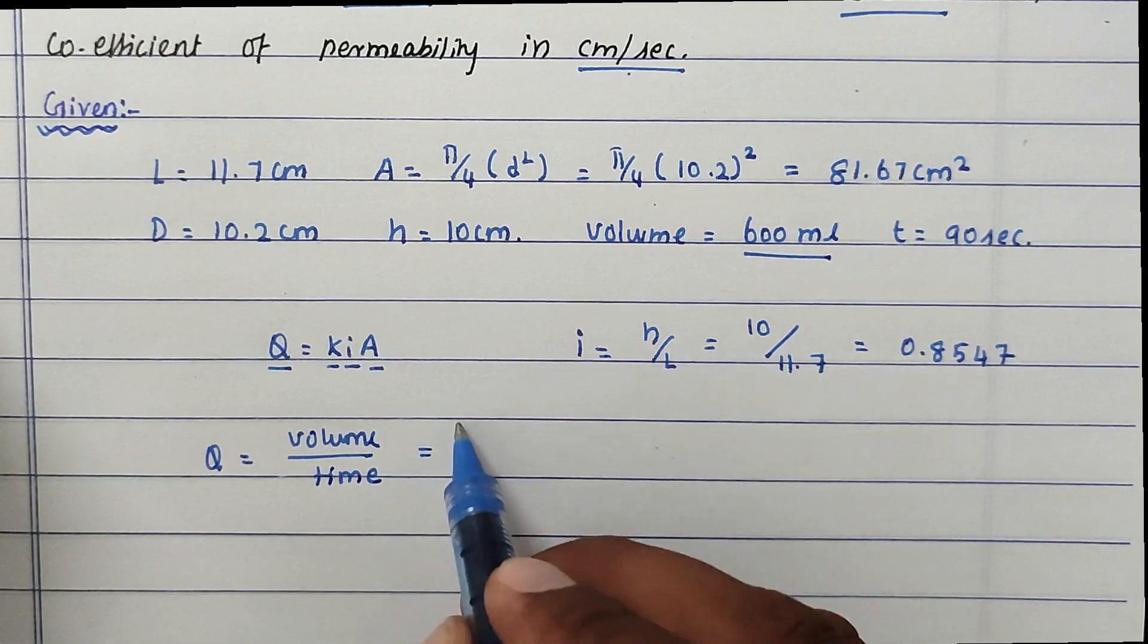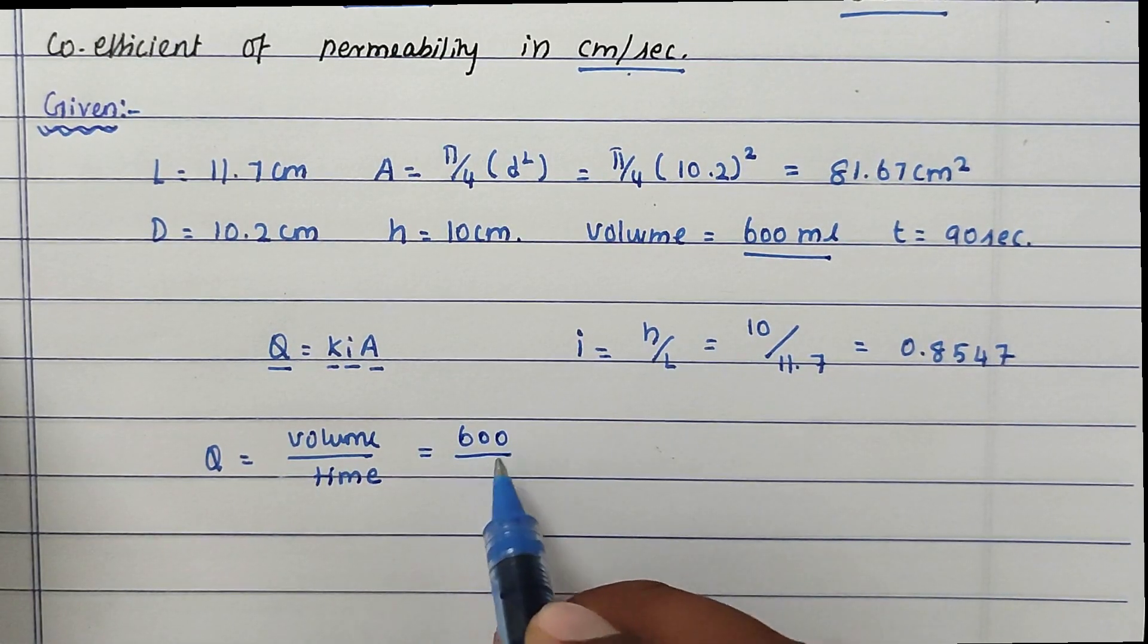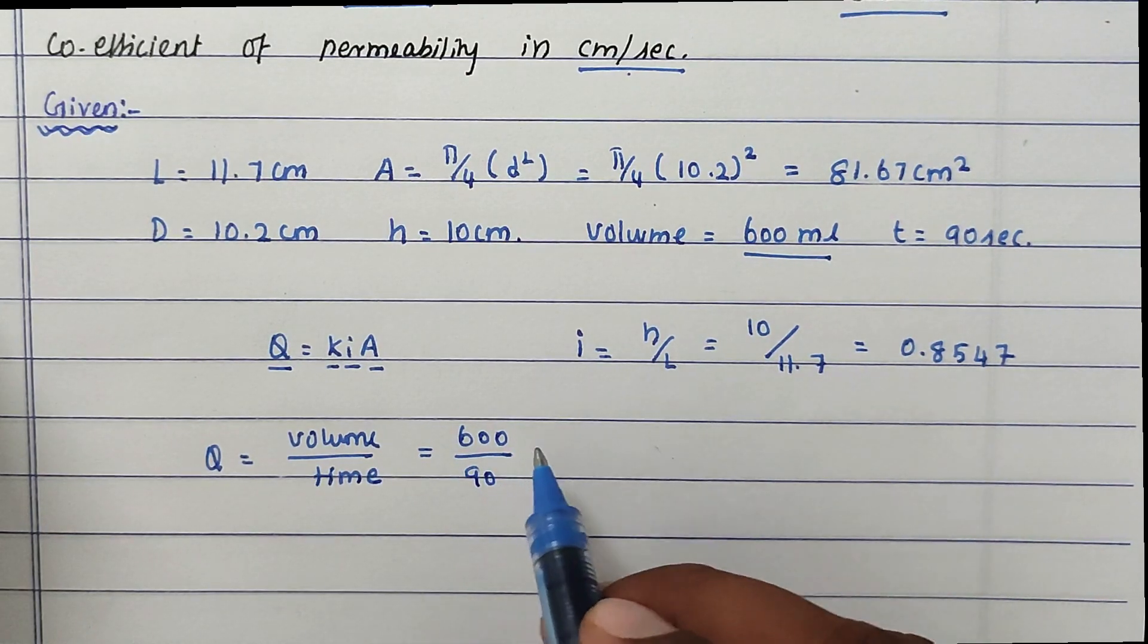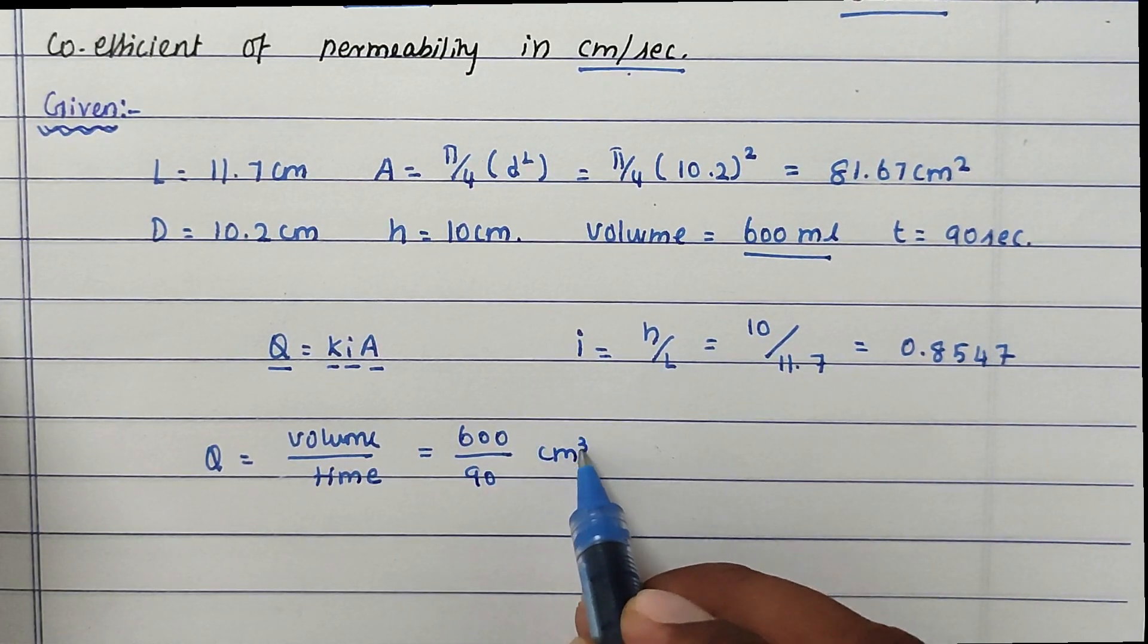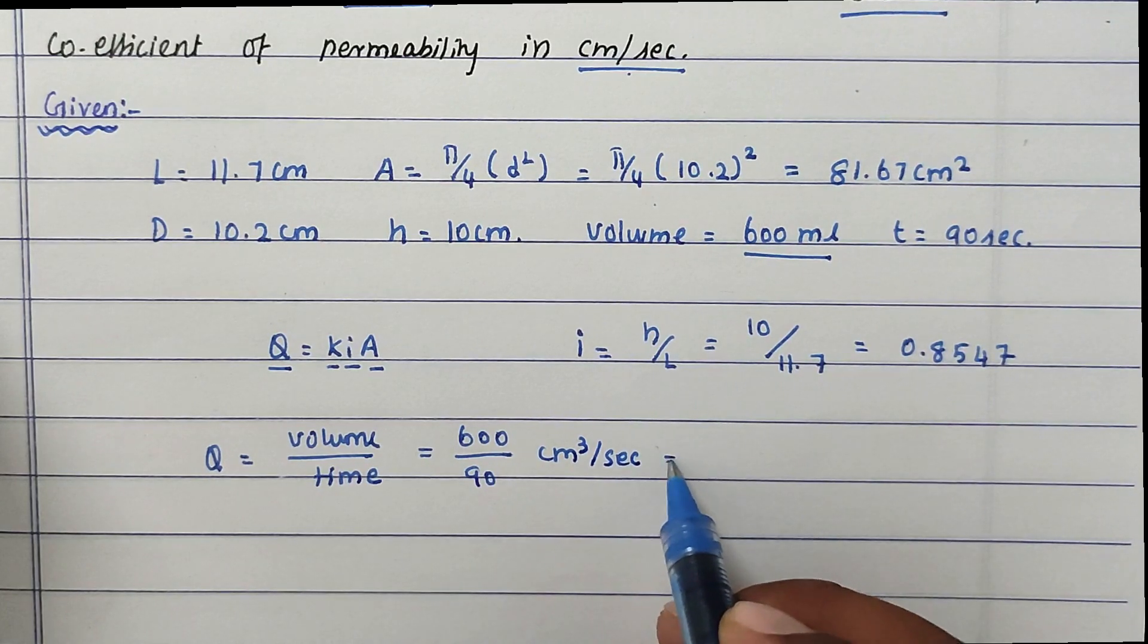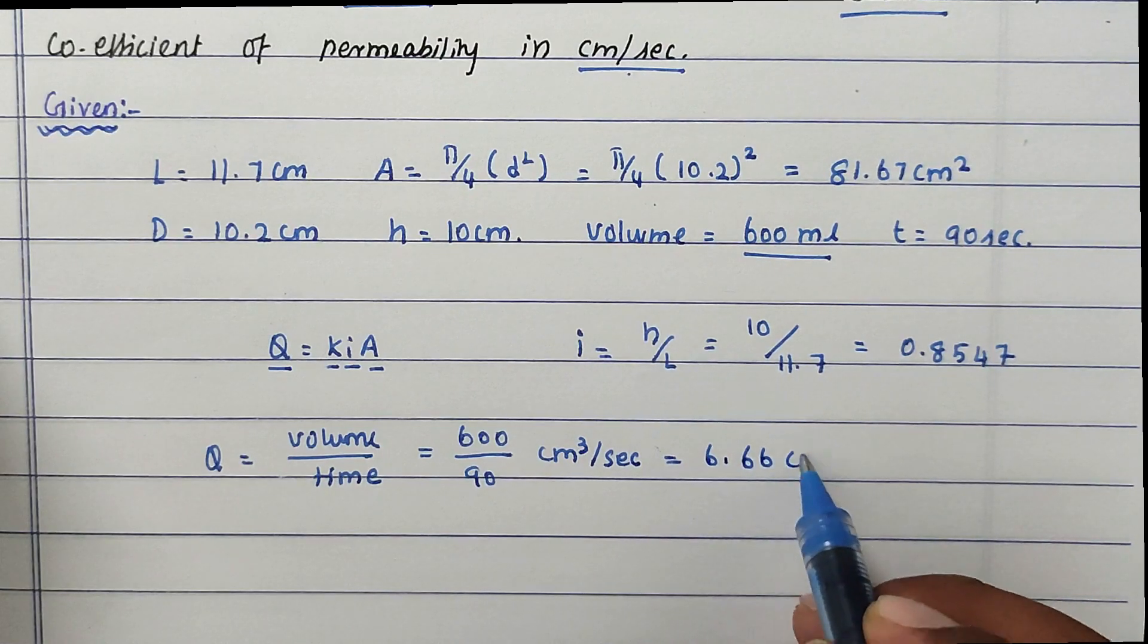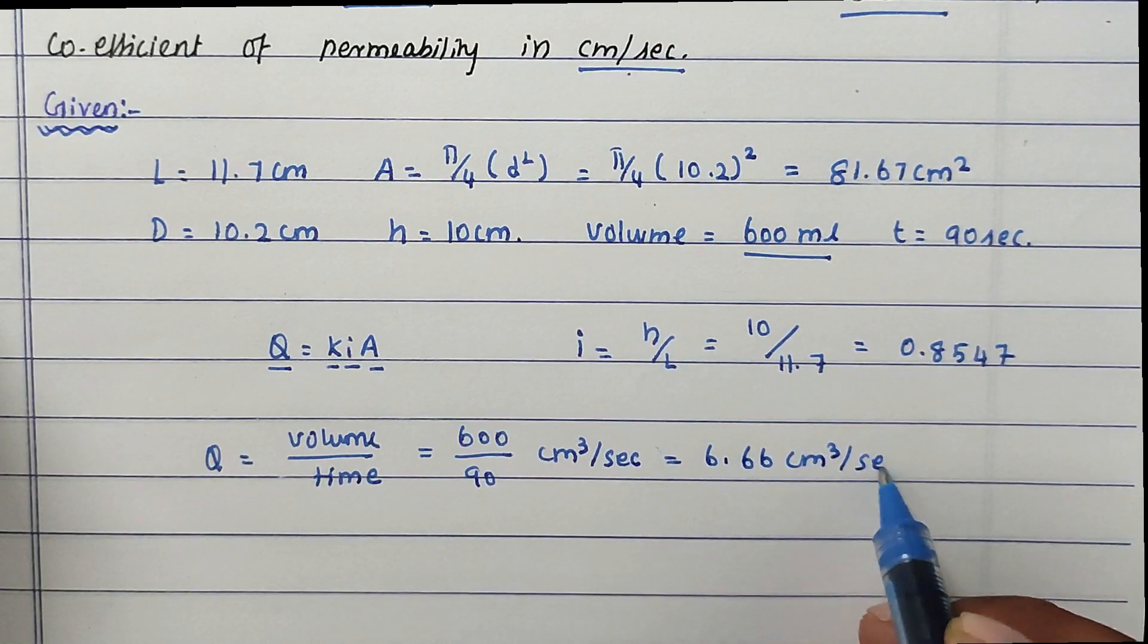The volume is 600 divided by time, 90 seconds. That is cm³/sec. The value will be 6.66 cm³/sec.